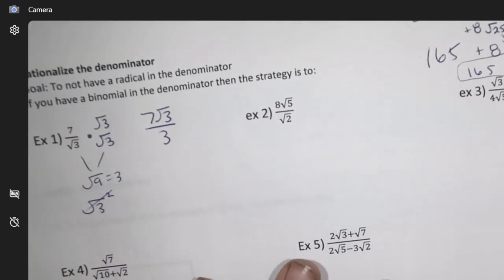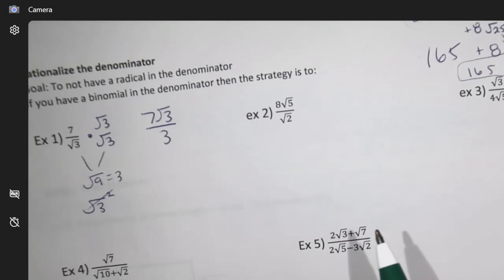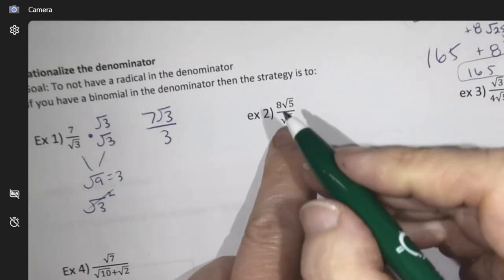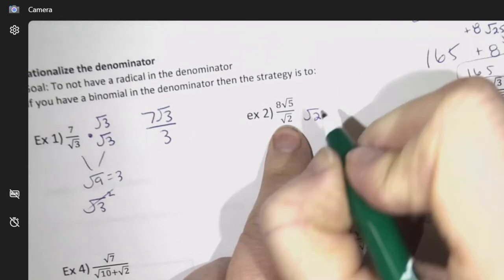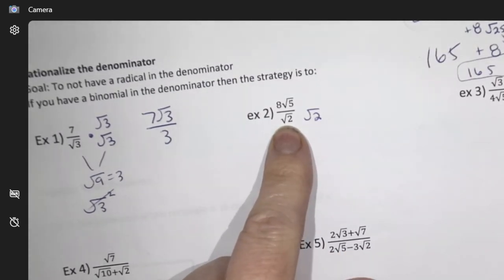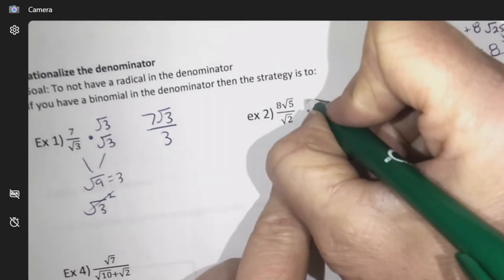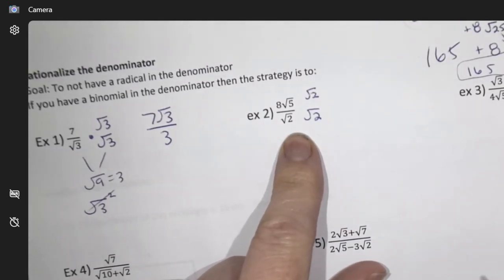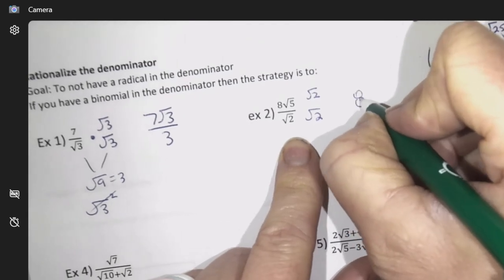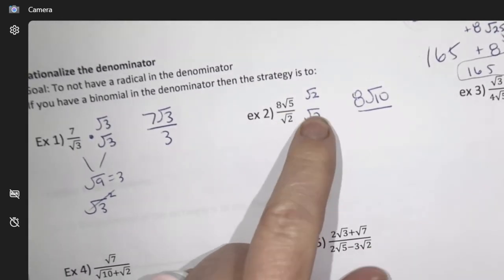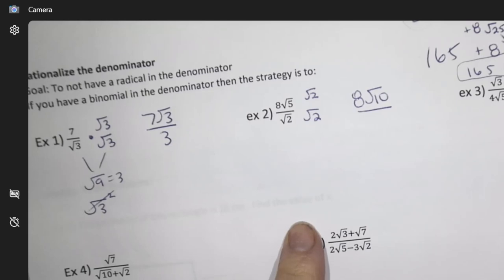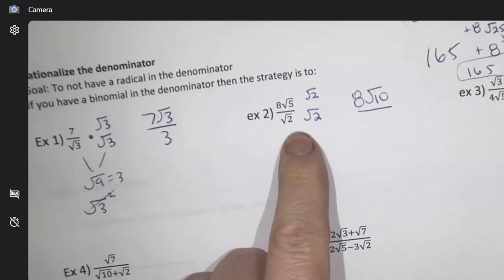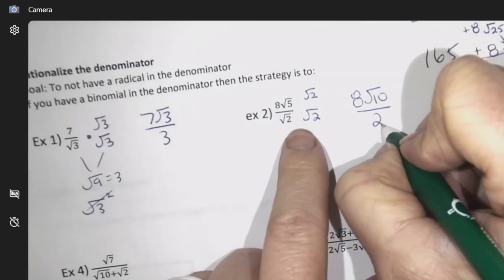Okay, so the next one. I want to get rid of a radical on the bottom, so I look at the bottom. There's a root 2, so I'm going to times it by root 2. If I do that to the bottom, then I do that to the top. So I get 8 root 10, and then again here what's root 2 root 2? Just 2.